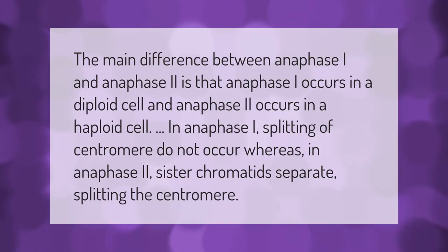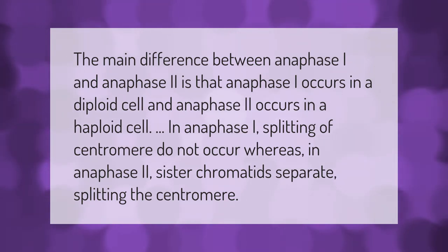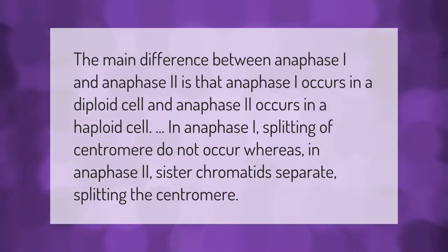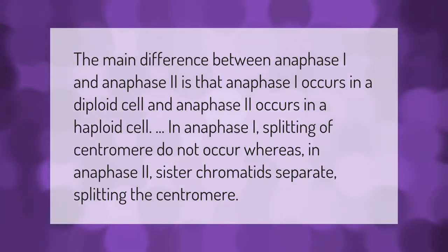The main difference between anaphase I and anaphase two is that anaphase I occurs in a diploid cell and anaphase two occurs in a haploid cell. In anaphase I, splitting of the centromere does not occur, whereas in anaphase two, sister chromatids separate by splitting the centromere.